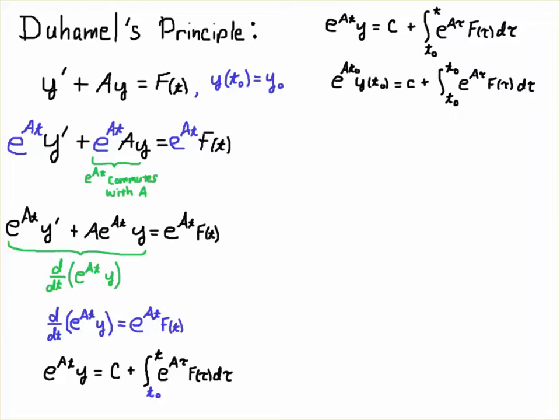I'm going to invoke the initial condition. So I put the t_0 in, wherever I see a t, and we see that the integral is zero. And I'm going to invoke the initial value, y of t_0 is equal to y_0.